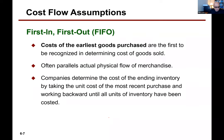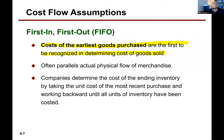Now let's talk about first in, first out. Under FIFO, the cost of the earliest goods purchased are the first to be recognized in determining the cost of goods sold. Companies determine the ending inventory by taking the unit cost of the most recent purchases and working backward until all units in inventory have been costed. Let's just go ahead and do an example.